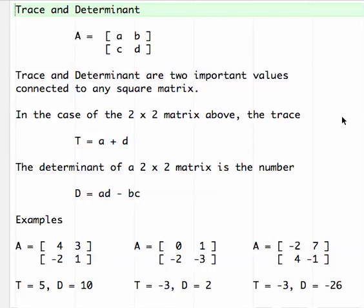Trace and determinant are two important values that are connected to any square matrix. In the case of a 2 by 2 matrix, the trace is the sum of the elements on the main diagonal, A plus D.